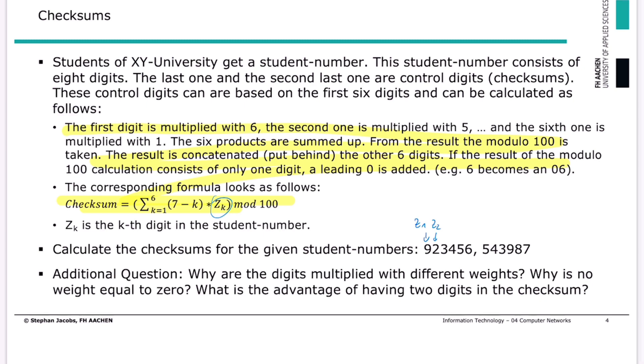And k goes from 1 to 6, so 7 minus k: 7 minus 1 is 6, then 5, 4, 3, 2, 1. These are the weights where we have to multiply and add up the complete numbers.